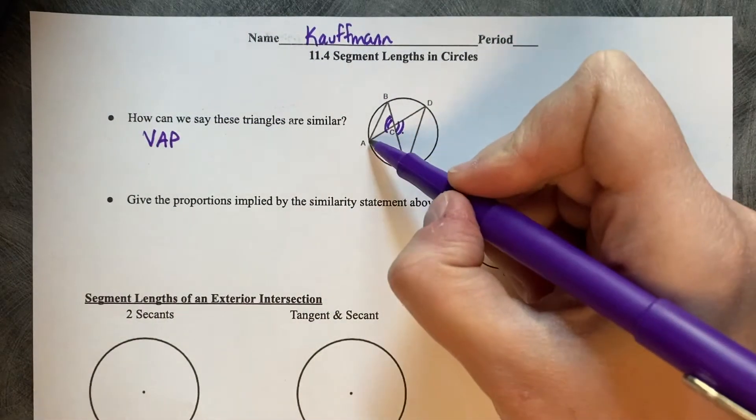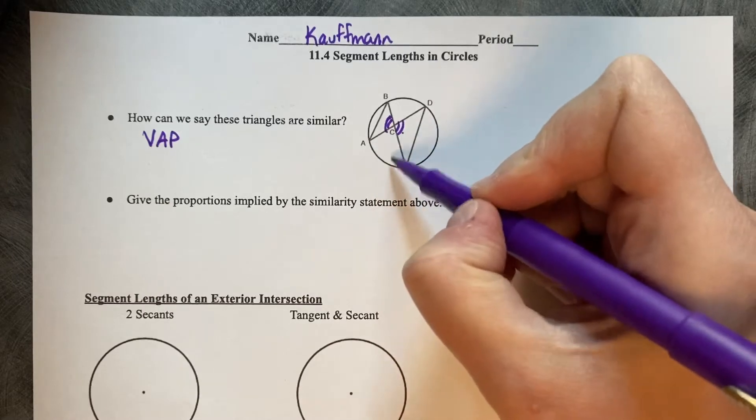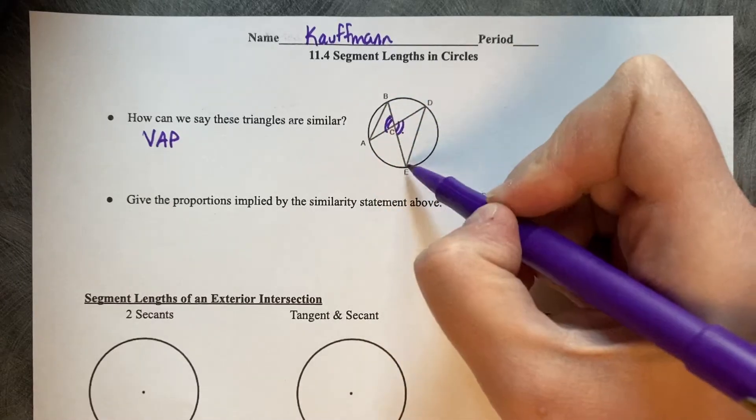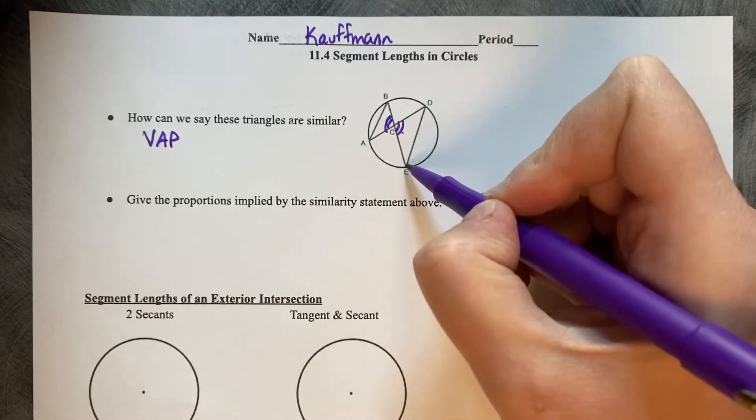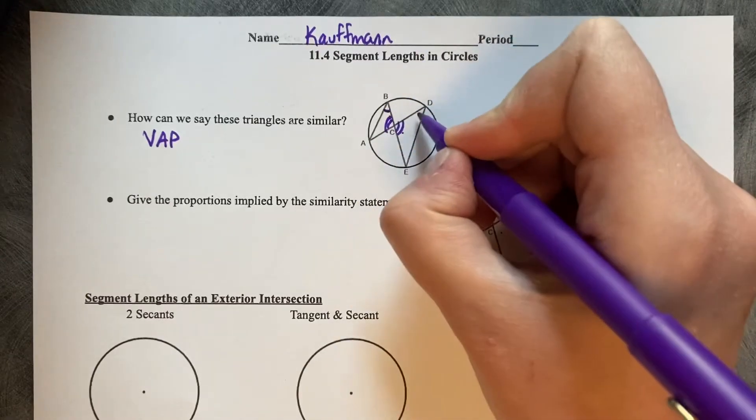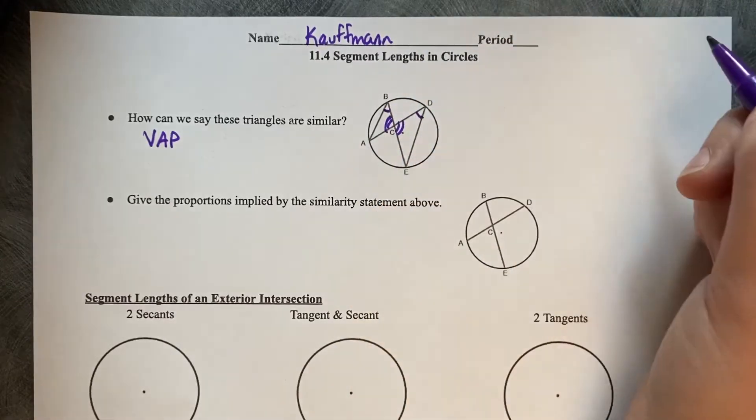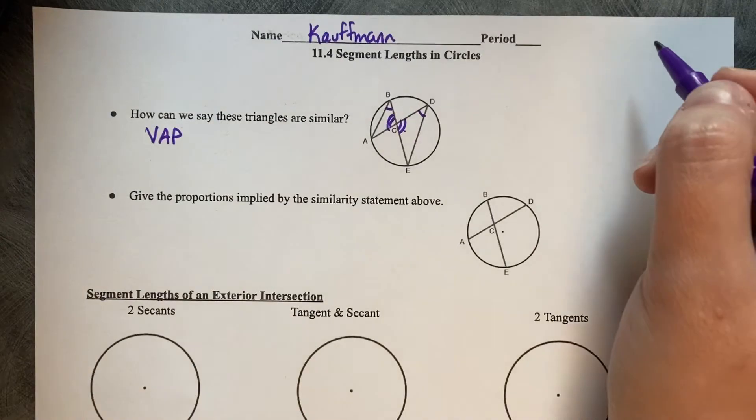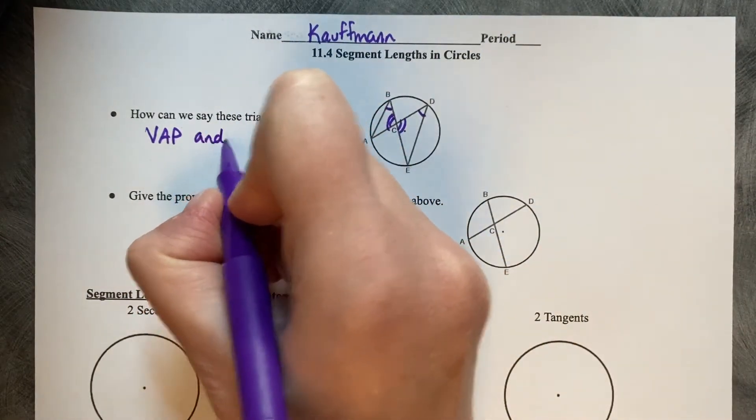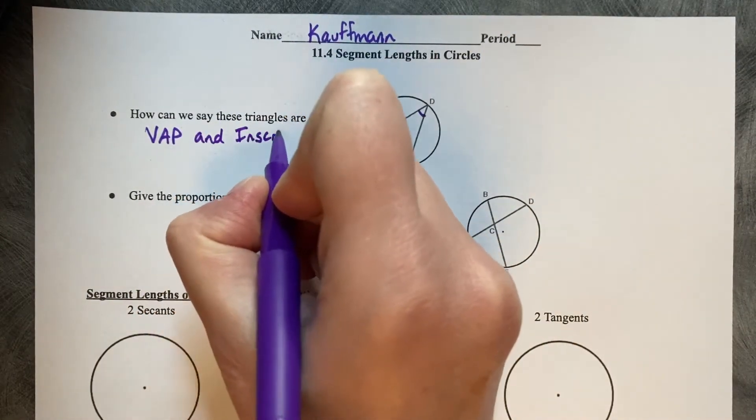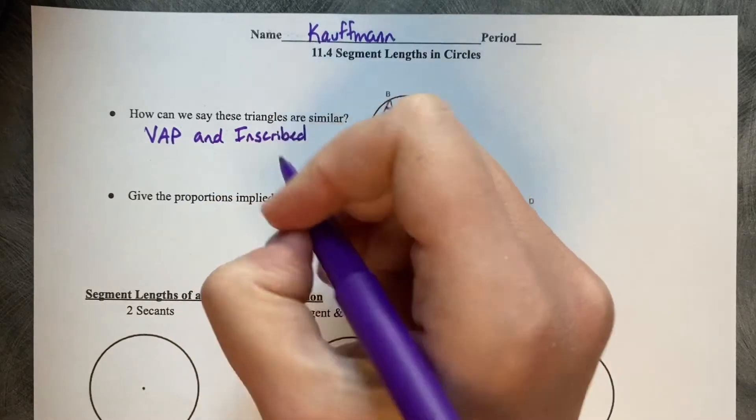Then we can see that the arc AE is shared by both ABE and ADE, which means that angle B at vertex B and angle D are equal angles by the inscribed angles theorem.